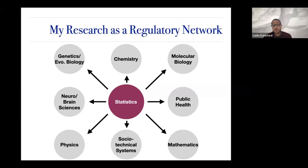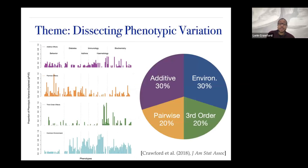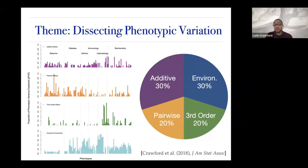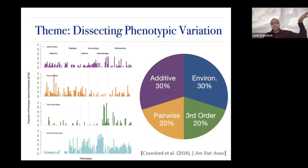At the crux of my research program is this idea of dissecting phenotypic variation. You can think about a phenotype as anything — something as simple as height or body mass index, or something more complicated like T cell count in different mice. Here's a really cool plot from 131 different traits from a panel of mice. We take a variance component model and ask what type of effects are driving the variation across these different traits — additive effects, pairwise, third-order, and gene-environment interactions.